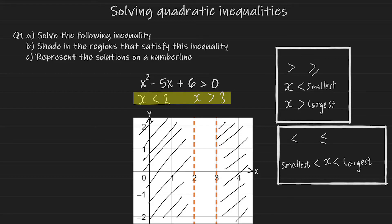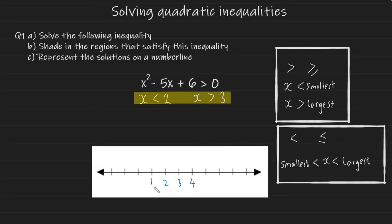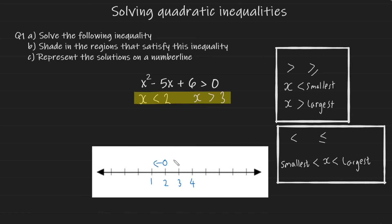Now let's represent these solutions on a number line with numbers one, two, three, and four. Where x is less than two, we go to two on the number line and draw a hollow circle — it's hollow because the less than symbol does not have an equals component. The inequality symbol acts as an indicator of which direction the arrow goes, so the arrow heads to the left. For x is greater than three, we draw a hollow circle above three and an arrow heading to the right.